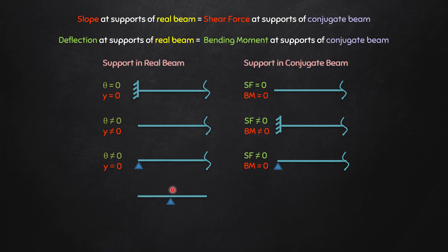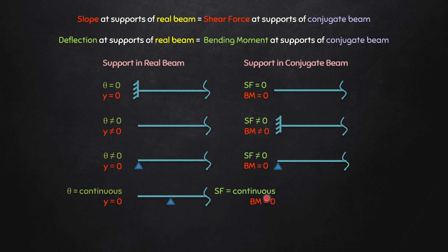For an intermediate hinge support, theta is continuous — the same angle continues on both sides — and y equals zero, so no vertical movement is allowed. In the conjugate beam, shear force should also be continuous and bending moment will be zero. That is an internal hinge. So if you have an intermediate hinge support in the real beam, you will have an internal hinge in the conjugate beam.